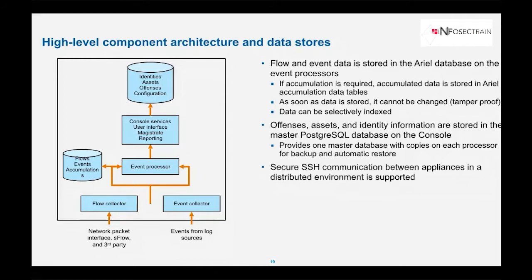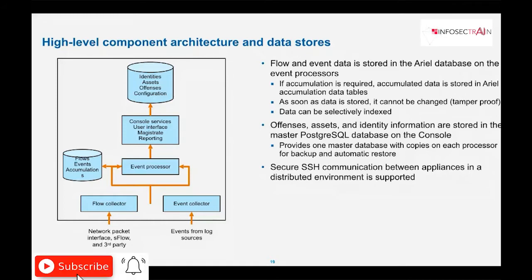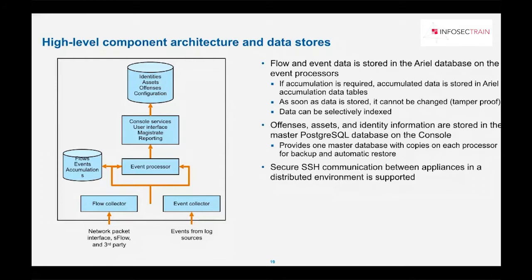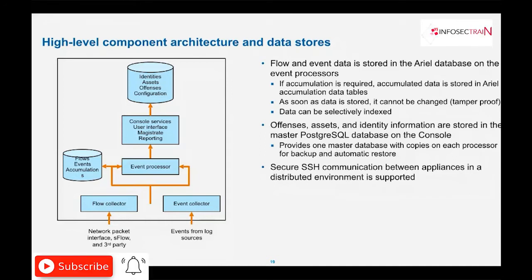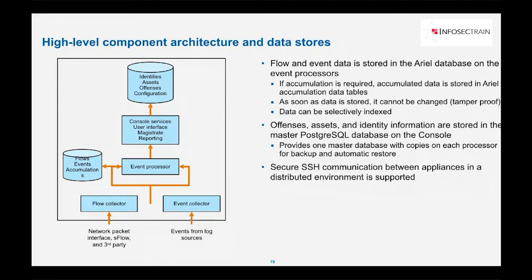That flow is sent to the event processor, which can also be a flow processor since it can process both flows and events. One database is attached to the event processor for accumulations — if you want to run reports for the last five, ten, or twelve days, that information is accumulated separately based on source IPs, destination IPs, source port, destination port, and username. Accumulation is done using source IP, destination IP, username, event ID, and basic parameters common throughout any event.